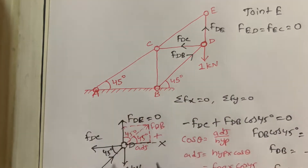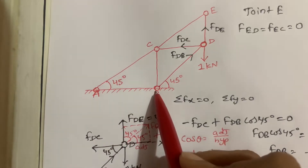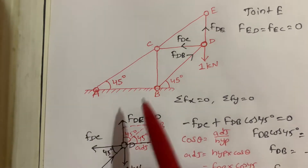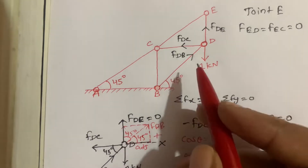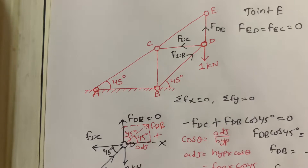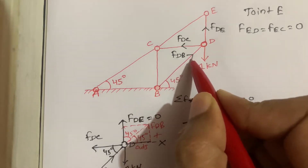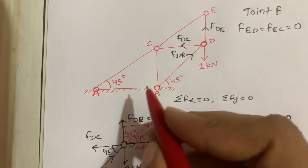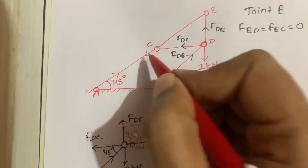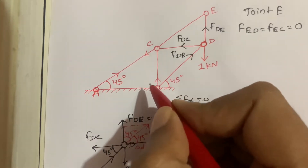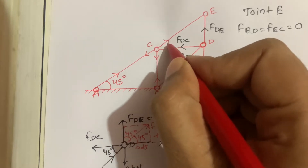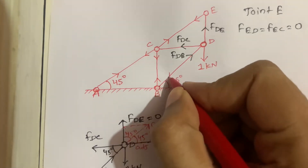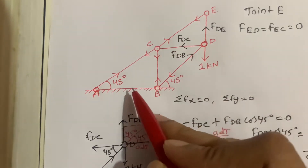In this truss, these two joints are hinged to the foundation, so it is not necessary to find the support reactions. Now I'm going to assume the axial forces in all the members. Here I assumed a compressive force, this is also compressive, and this is a tensile force. First we assume the direction of axial forces, and later we calculate whether those assumed directions are correct or not. Like that I assumed all the forces in the members.